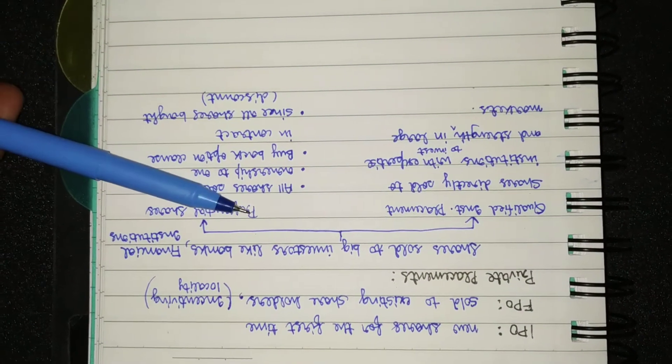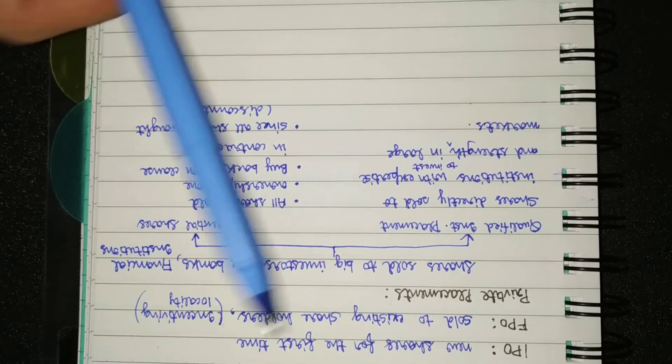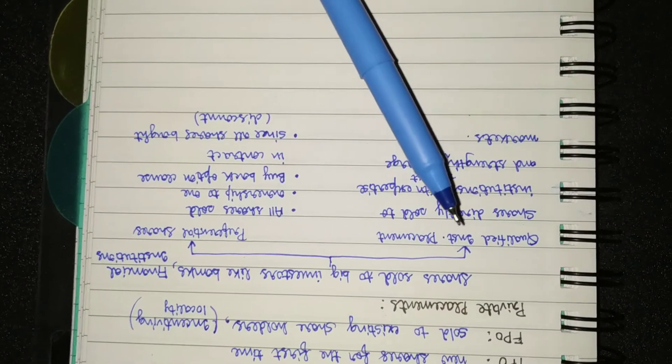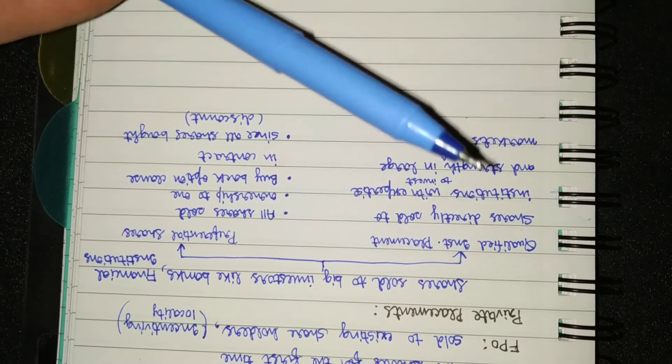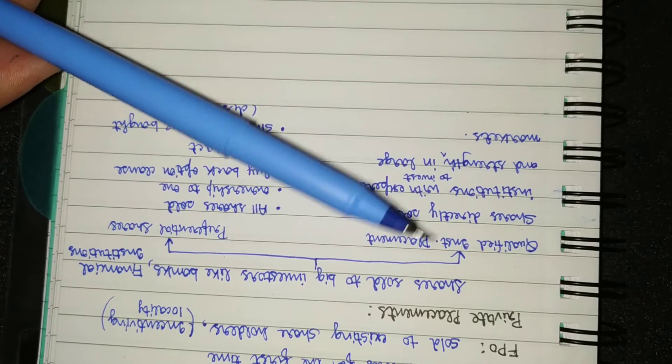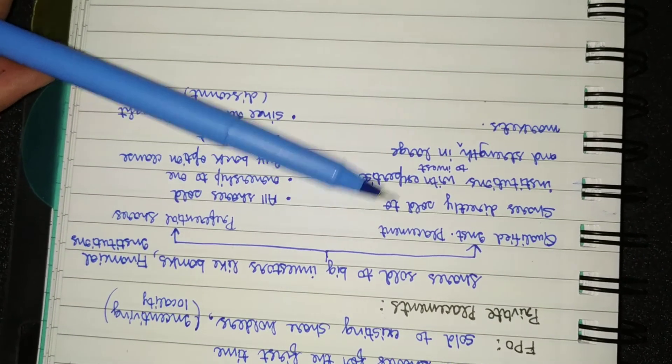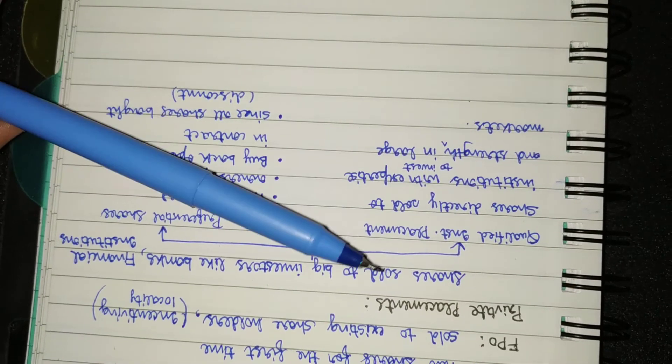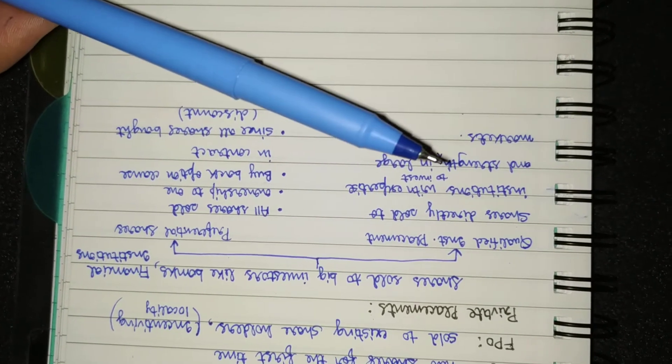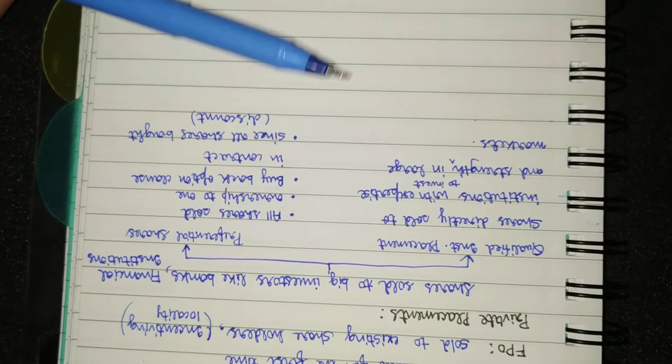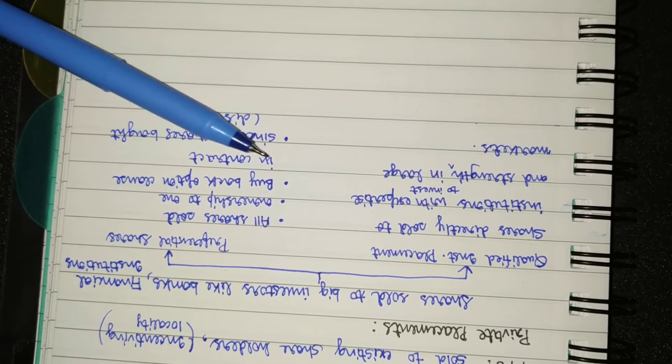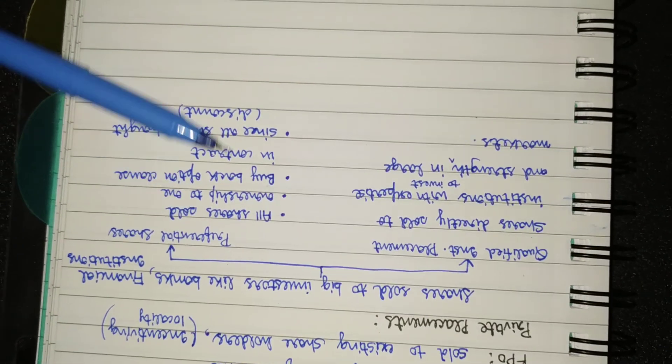So here is all we have in proper format: the private placements, two types, QIP and preferential shares. QIP was introduced in order to not let the companies get in the hands of the foreign investors, or let the foreign investors' influence be at bay, and let the Indian domestic investors invest here. Preferential shares, as I have already told, they buy all the shares but they ask for discount. So that's all. Thank you.